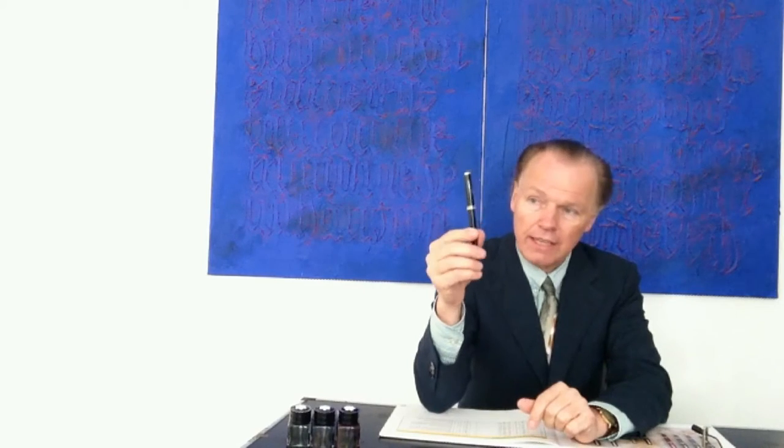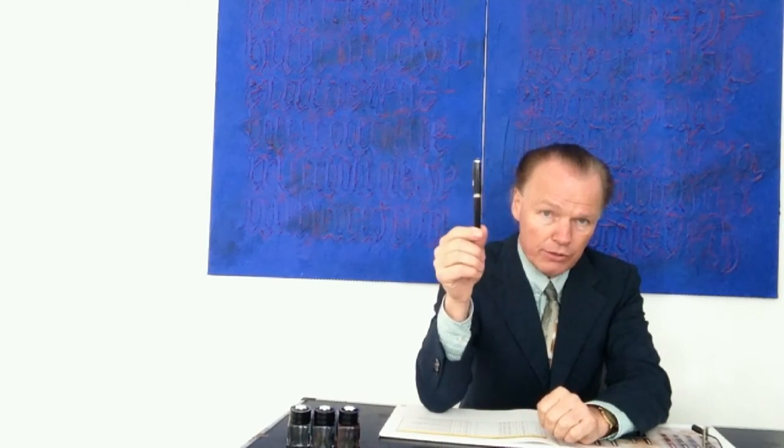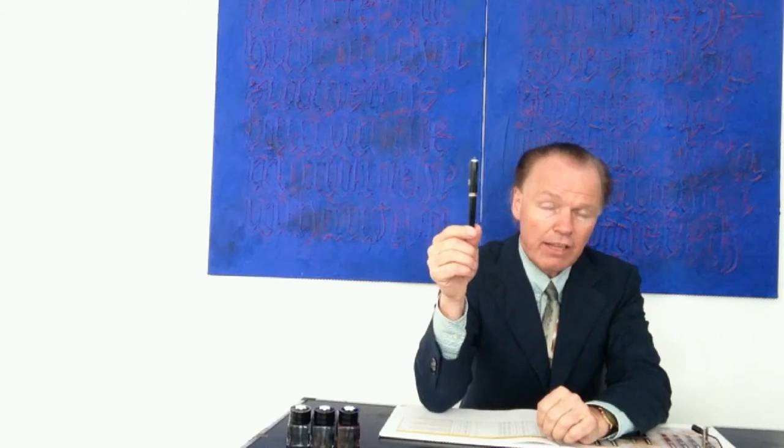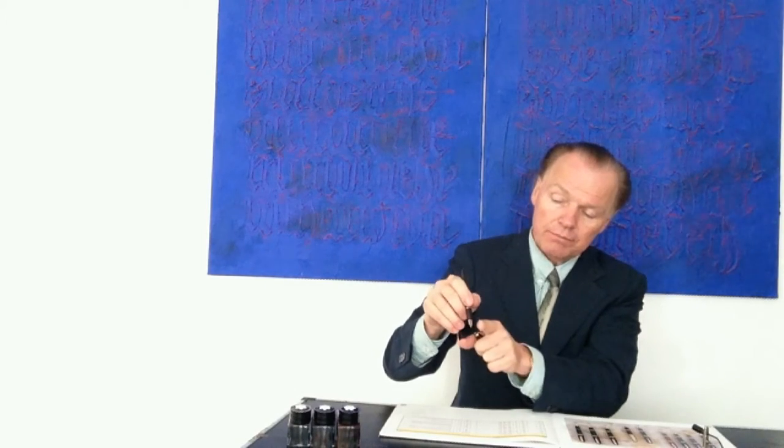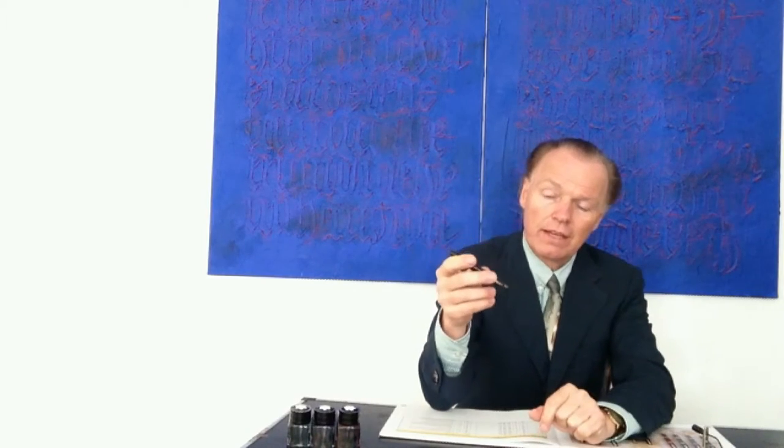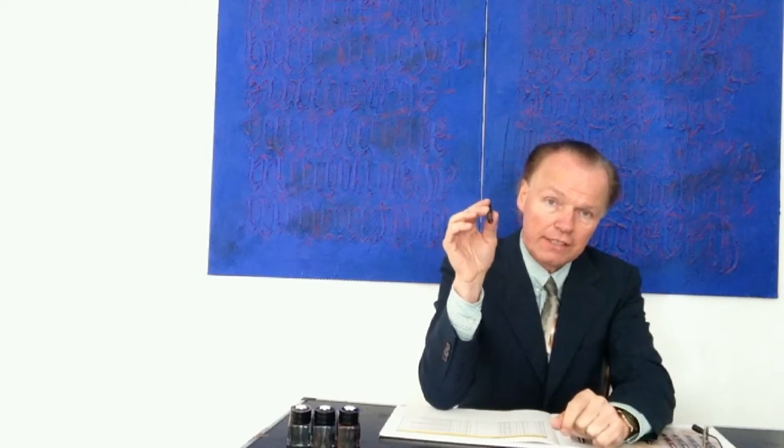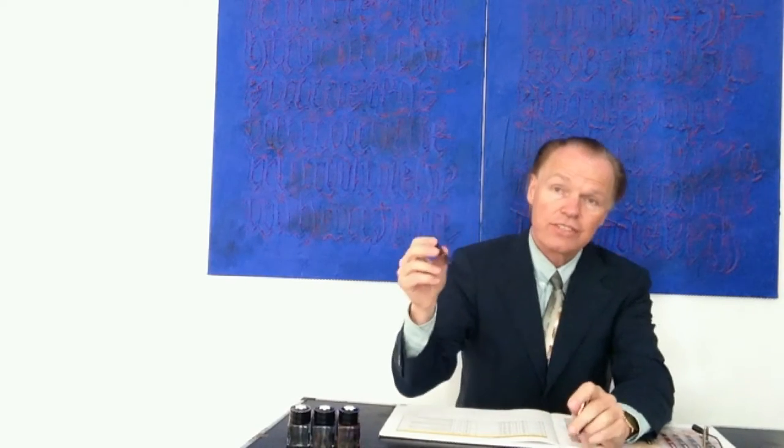This pen was made from 1954 to 1959. Later, Mont Blanc changed the design of the front end of the pen. The bad part of the wing nib is that it's rather ugly. So they covered the nib in the next series of fountain pens.